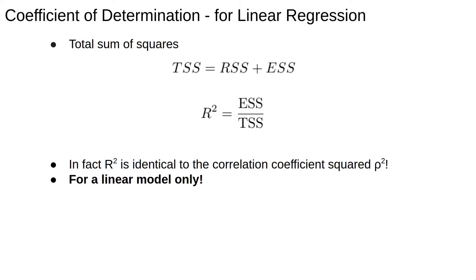In fact, R squared turns out to be identical to the square of the correlation coefficient. Remember, this decomposition is only true for a linear model. You can also compute R squared for a non-linear model, where these relationships do not hold. Part of the reason you might want to do a data transformation instead of a non-linear fit is because there are so many nice relationships like this for linear models.